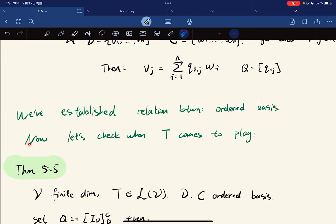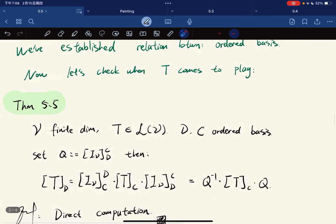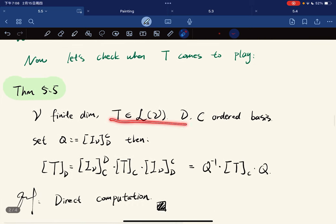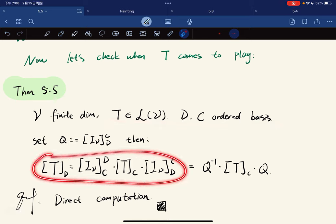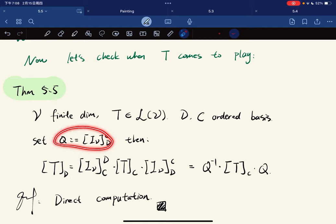Now we have established relations between ordered bases. Let's check when the linear map comes into play. V is finite dimensional with ordered basis, then we have this is true where Q is the change of coordinate matrix.